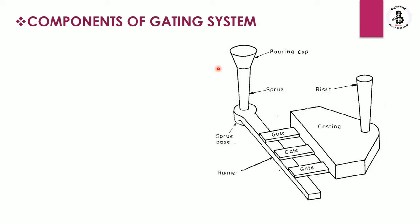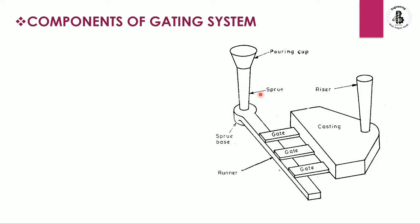You can see the basic arrangement of the different components, starting with a pouring cup. The pouring cup is used for collecting the molten form of the metal, and this pouring cup is connected with the sprue. The sprue is nothing but a vertical passage provided for the molten metal to travel from the pouring cup through the different systems towards the mold cavity. At the end of the sprue there is a sprue base, which also collects the molten metal passing through the pouring cup and sprue.